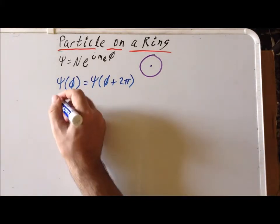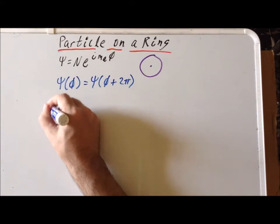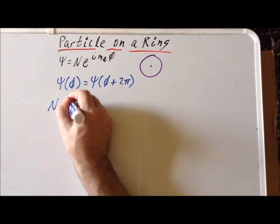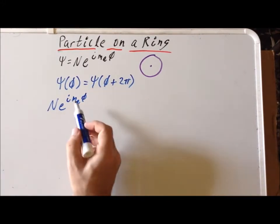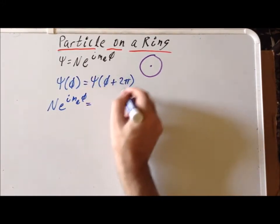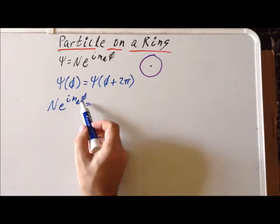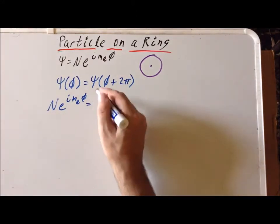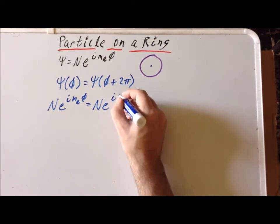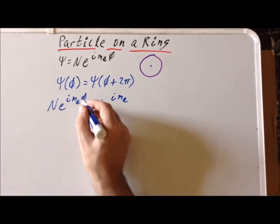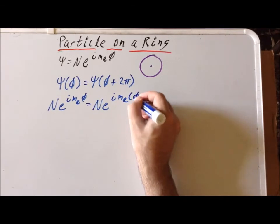So how do we write that? Well, the wave function at any particular point is going to be N times e to the i m sub l phi. So now what we do is, for this part, is simply replace phi by phi plus 2 pi. So what does that give us? It gives us N times e to the i m sub l, and now I'm going to replace phi by phi plus 2 pi.